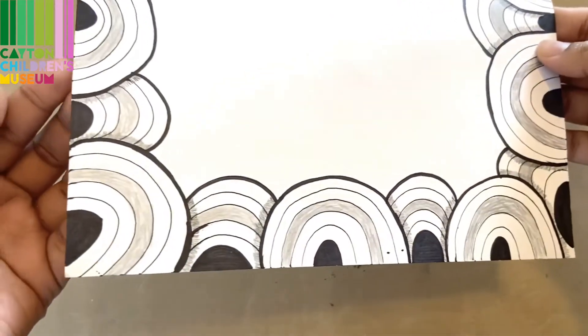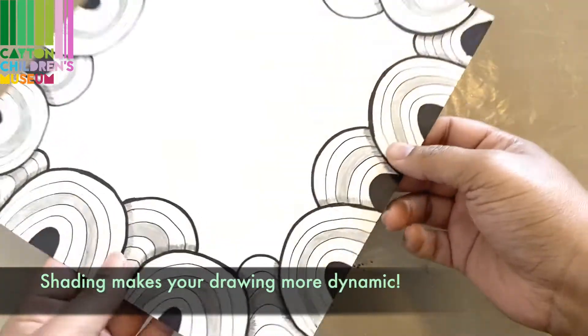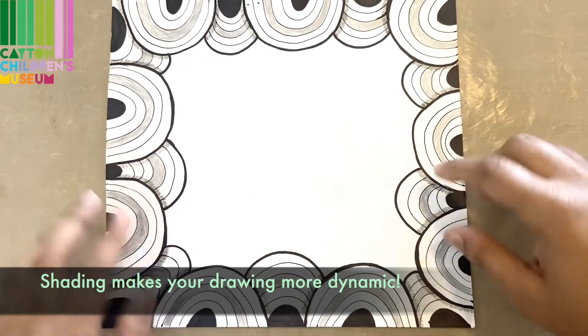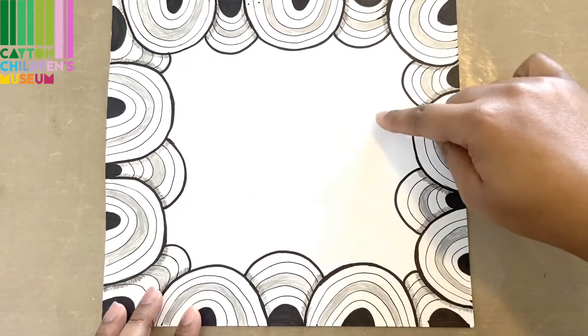And here is what all of the shading looks like so far. Now that we've gotten that part done, I'm going to go ahead and add in some more rainbow shapes.